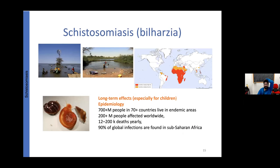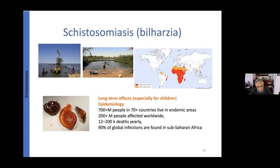Schistosomiasis affects many parts of the world — mainly sub-Saharan Africa, with some presence in the Middle East, Far East, and South America. It potentially affects more than 700 million people across more than 70 countries living in endemic areas, with over 200 million people actively infected worldwide and several tens of thousands of deaths per year. Ninety percent of global infections are found in sub-Saharan Africa.